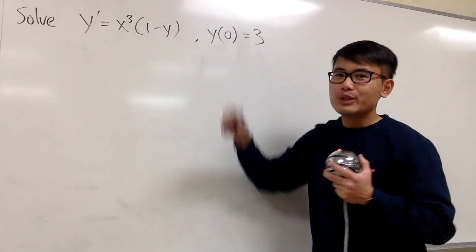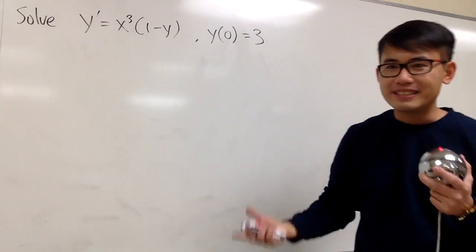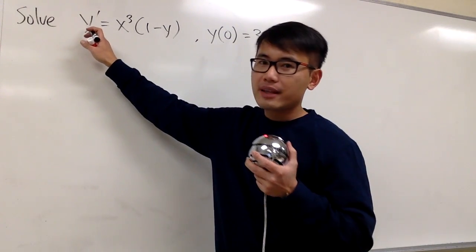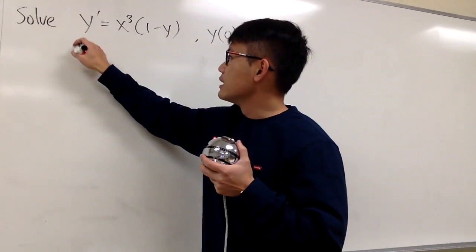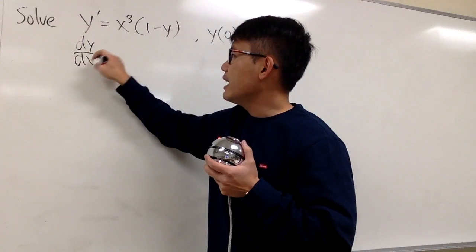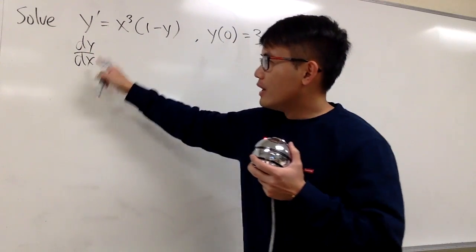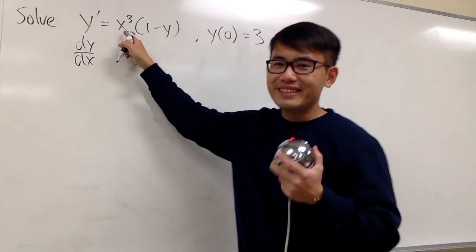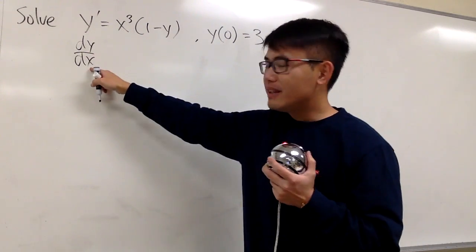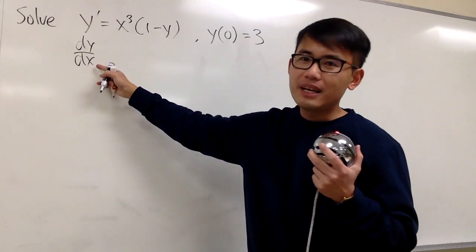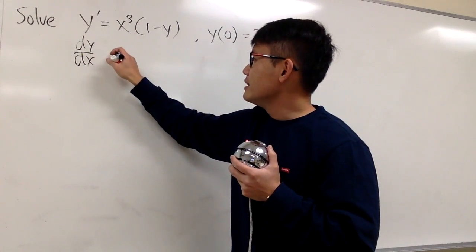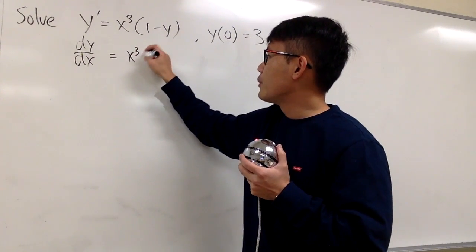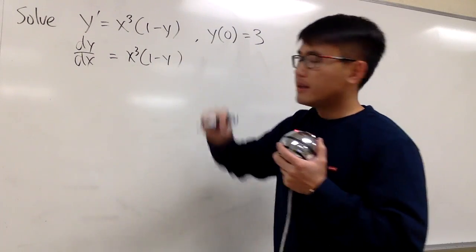We are going to use this initial condition to help us solve for C later on. First, let's rewrite y' as dy/dx. We know it's dx because we have x here already, so the independent variable must be x as well. This is equal to x to the third power times 1 minus y.